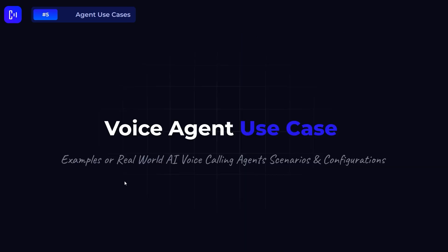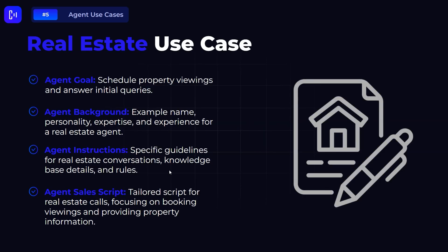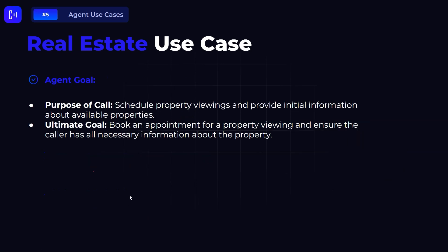There are a couple of voice agent use cases with examples from real-world AI voice calling agent scenarios. We've seen a lot of usage in real estate. A use case for a real estate company: the agent goal is to schedule property viewings and answer initial queries; the agent background covers personality, expertise, and experience for the real estate context; the agent instructions are specific guidelines for real estate conversations, including a knowledge base and rules; and the sales script is tailored for booking viewings and providing property information.